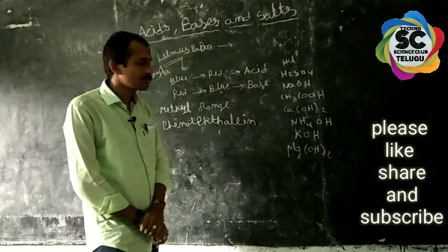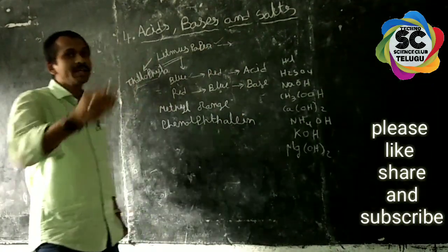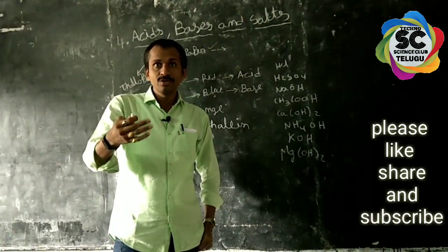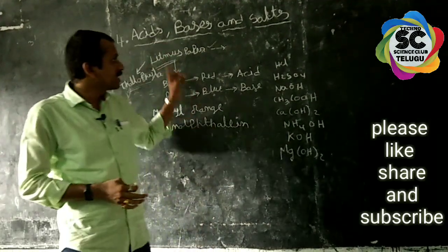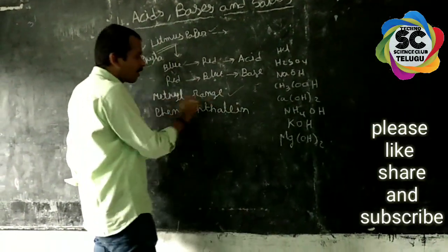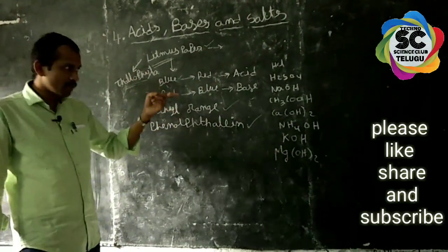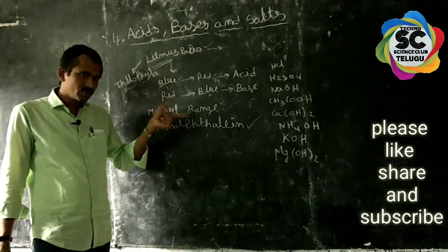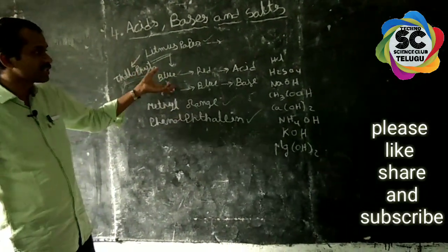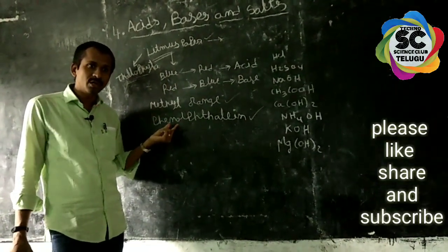Litmus paper is not the only indicator. We have two types of indicators: natural indicators and chemical indicators. Some other indicators include methyl orange solution and phenolphthalein solution. These two solutions are also indicators for acids and bases, and they are used as universal indicators.